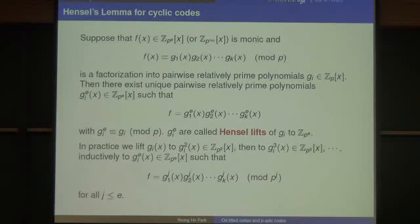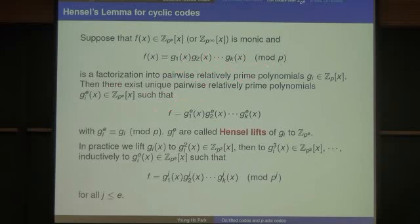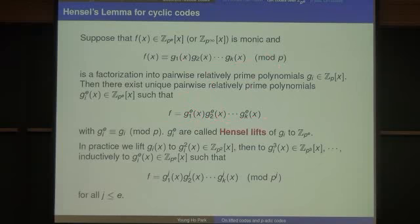We also need a polynomial version of Hensel's lemma. Suppose we have a monic polynomial f in Z/p^e[x], and suppose we have a factorization mod p into pairwise relatively prime polynomials g_i. Then there exist unique pairwise relatively prime polynomials g_{i,e} in Z/p^e[x] such that f equals their product, where g_{1,e} is congruent to g_1(x) and g_{2,e} is congruent to g_2(x) mod p. This polynomial lift is called the Hensel lift.